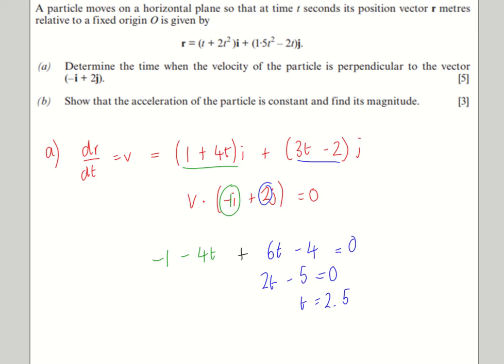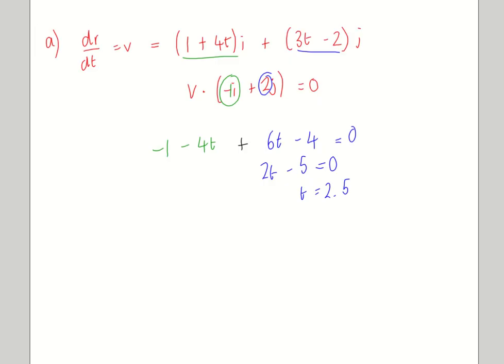And then part b, show the acceleration of the particle is constant and find its magnitude. Well, if it's constant, it will just be a number rather than be dependent on t. So we need to differentiate again. For it to be constant, remember, we need the t's to drop out, and they will. 1 plus 4t just ends up being 4 in the i direction. 3t minus 2 ends up being 3 in the j direction. Not dependent on t, therefore it's constant acceleration.